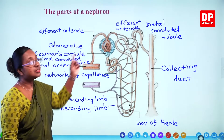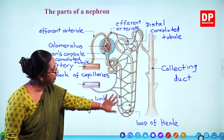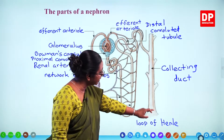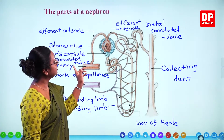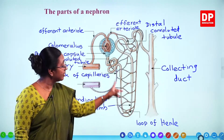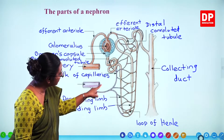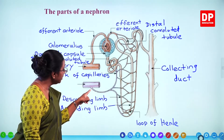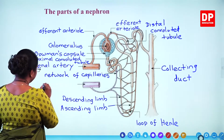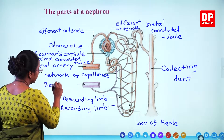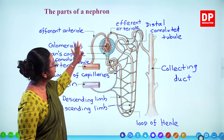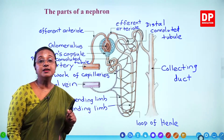The blood entering through the renal artery gets filtered. Urine is produced, all excretory materials are given to the urine, and it is collected into the collecting duct. The blood passes through all the capillary network around the tubules, and finally all capillary tubes join together forming the renal vein. Blood flows out through the renal vein. These are all the parts of the nephron.